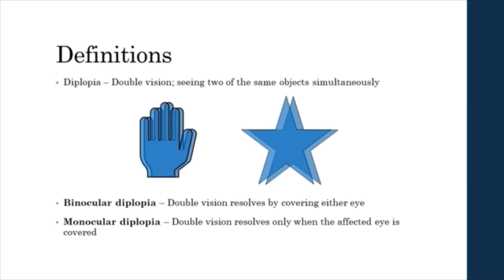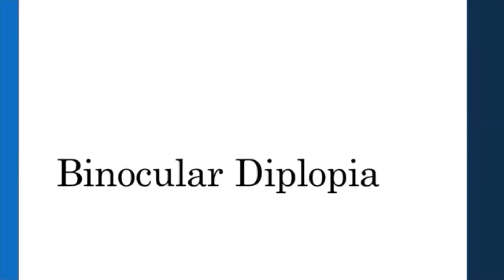First, we will define our topics of discussion. Diplopia is double vision, or seeing two of the same objects simultaneously. Binocular diplopia is double vision that resolves by covering either eye, while monocular diplopia is double vision that resolves only when the affected eye is covered. We will begin with the discussion of binocular diplopia.